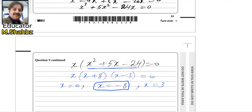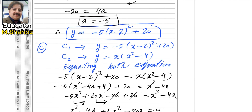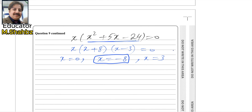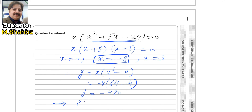Now we find the y-coordinate using the equation y = x(x² − 4). Plugging in x = −8: y = −8(64 − 4) = −8 × 60 = −480. Therefore the coordinates of P are (−8, −480). This is the required answer for question number nine.